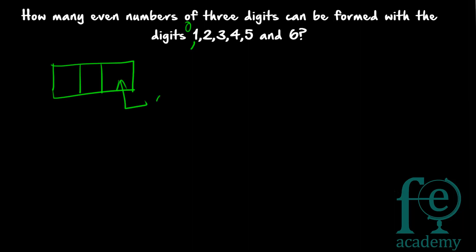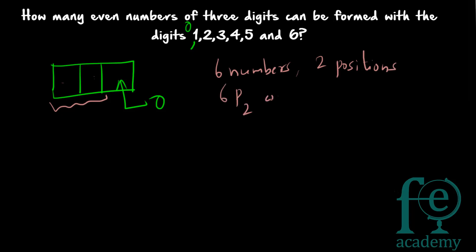When units digit equals 0, one digit is already used. The remaining 6 digits fill 2 positions with no repetition, so that can be done in 6P2 ways. 6P2 = 6! / 4! = 6 × 5 = 30 numbers possible in this case.